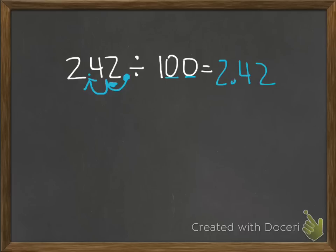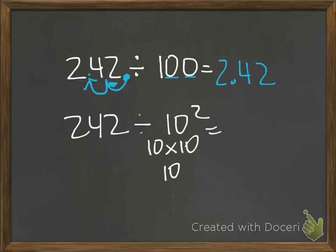You also can write 242 divided by 100, and you could write the 100 as an exponent. So the second power of 10, which really means 10 times 10, which is really 100, it would be the same exact answer, because 242 would be divided by the second power of 10, which is really 100, and the answer would be, as it was before, 2 and 42 hundredths.